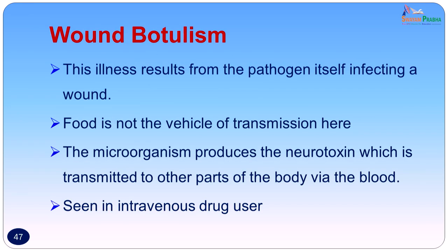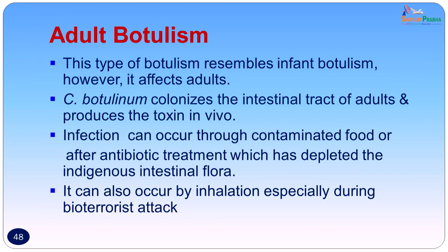An unusual manifestation of botulism is wound botulism. This results from the pathogen itself infecting a wound — food is not the vehicle of transmission. The organism enters through soil, multiplies in the wound, and produces a neurotoxin transmitted to other parts of the body via the blood. This is often seen in intravenous drug users who use unsterile syringes. Adult botulism resembles infant botulism but occurs in adults — Clostridium botulinum colonizes the intestinal tract and produces toxin in vivo. Infection occurs either through contaminated food or after antibiotic treatment, which depletes indigenous intestinal flora, allowing Clostridium botulinum to multiply, sporulate, and produce toxin. It can also occur by inhalation, especially during a bioterrorist attack.